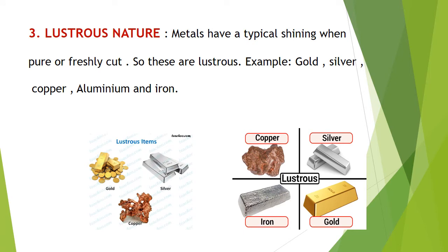The third property is the lustrous nature of metals. Metals have a typical shining when in pure state or freshly cut, so they are lustrous. Examples are gold, silver, copper, aluminum, and iron. As we see in daily life, these have their particular color and particular shining, and with the help of the shining we can identify whether it is copper, silver, iron, or gold.